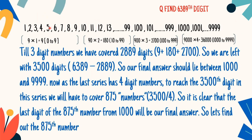So, we begin. We have written the series as they have asked us in the question. Now listen very carefully. From 1 to 9, till here we have 9 digits. All the digits are single digits. Therefore, 9 multiplied by 1, we have 9 digits.